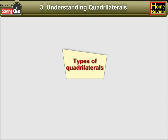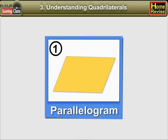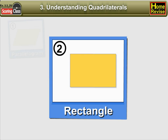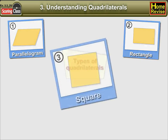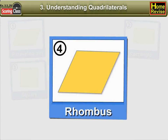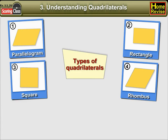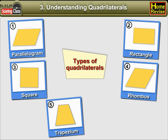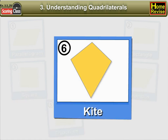Types of quadrilaterals. Following are the types of quadrilaterals: 1. Parallelogram, 2. Rectangle, 3. Square, 4. Rhombus, 5. Trapezium, 6. Kite.